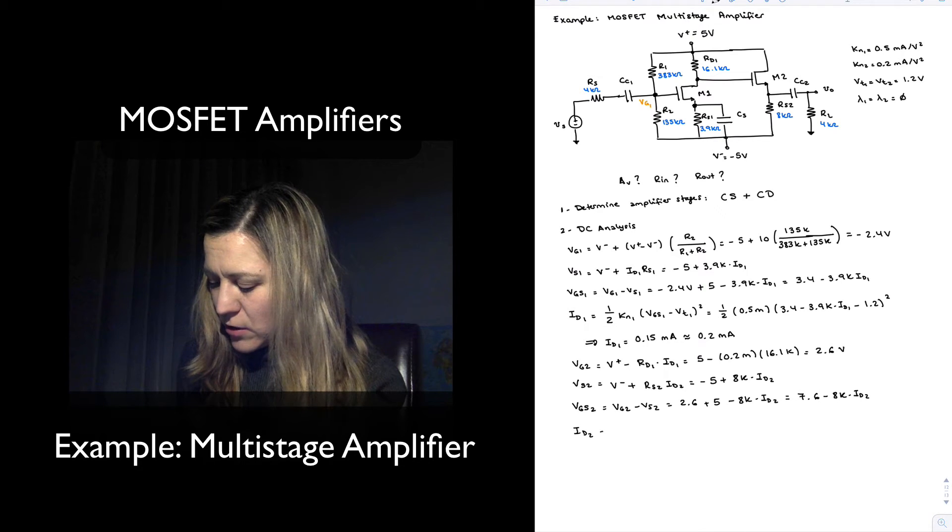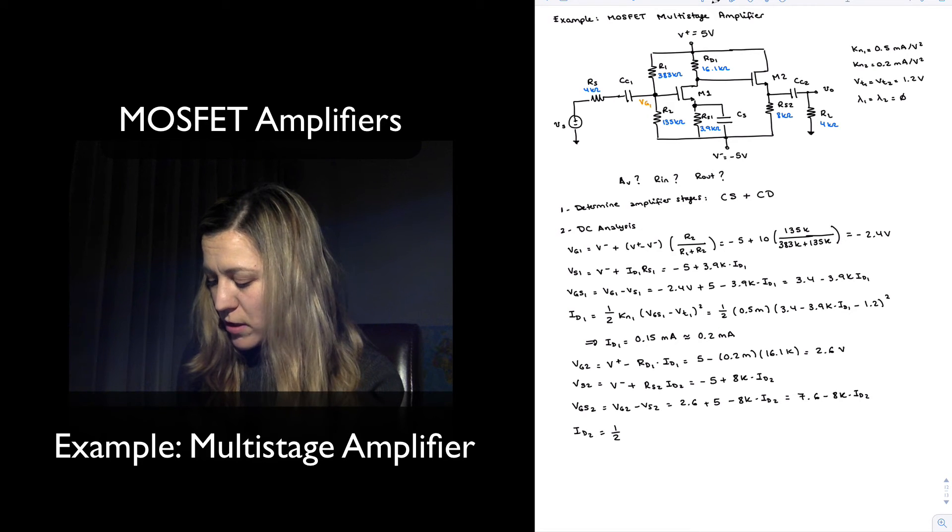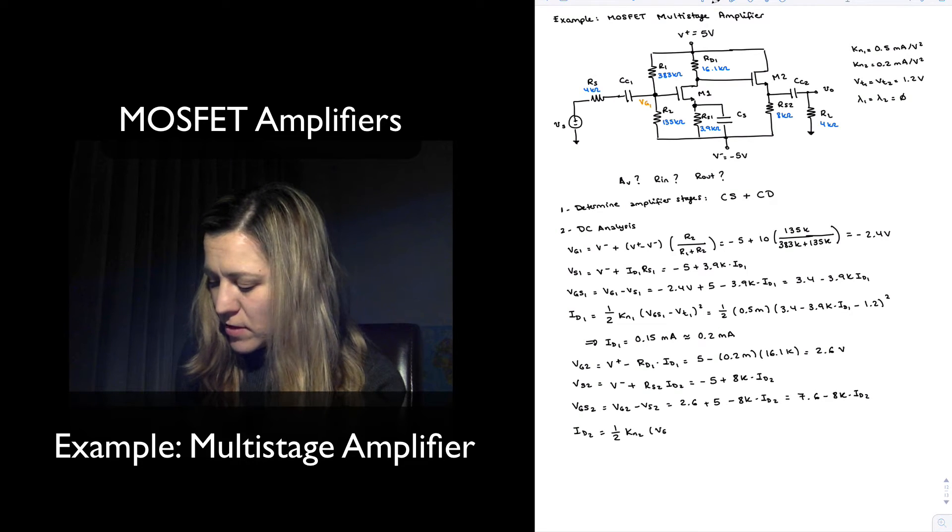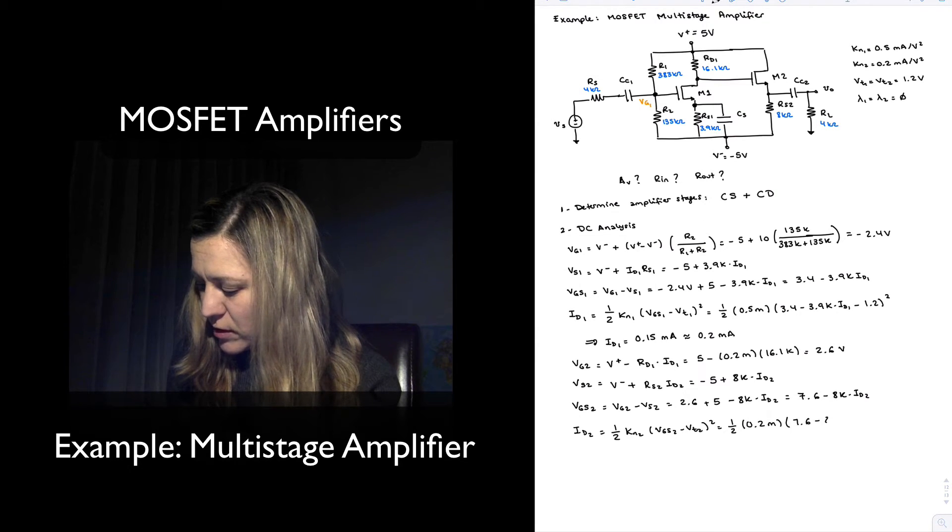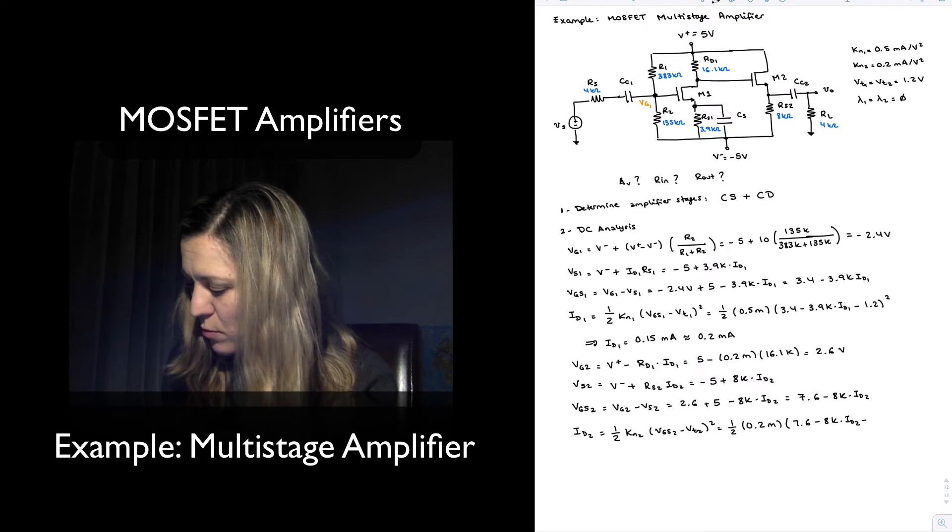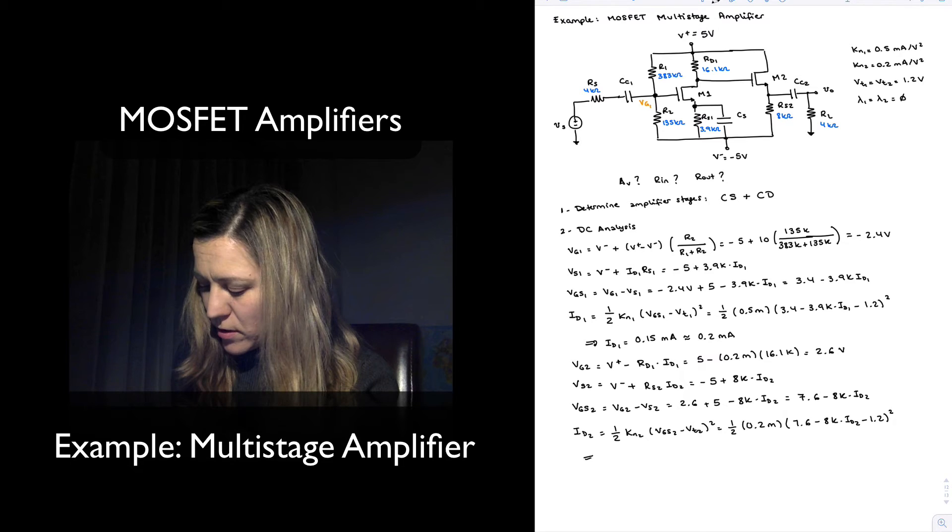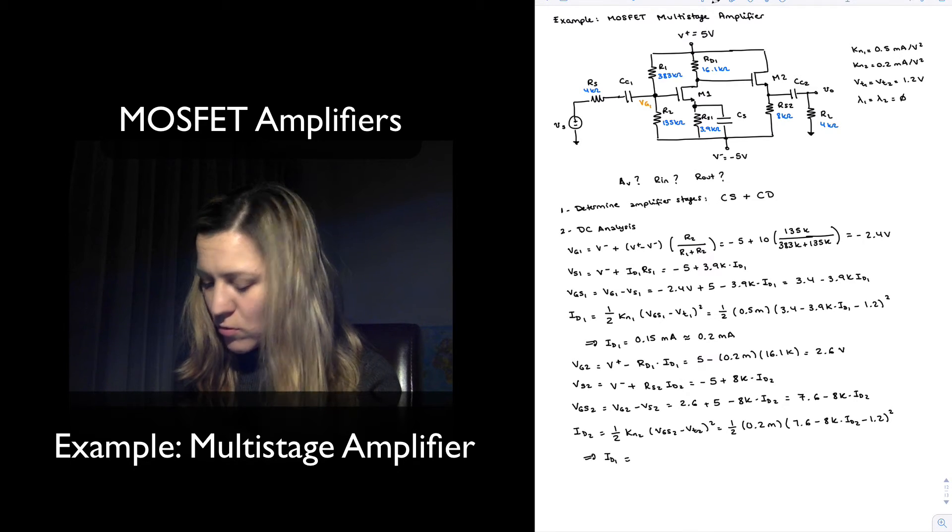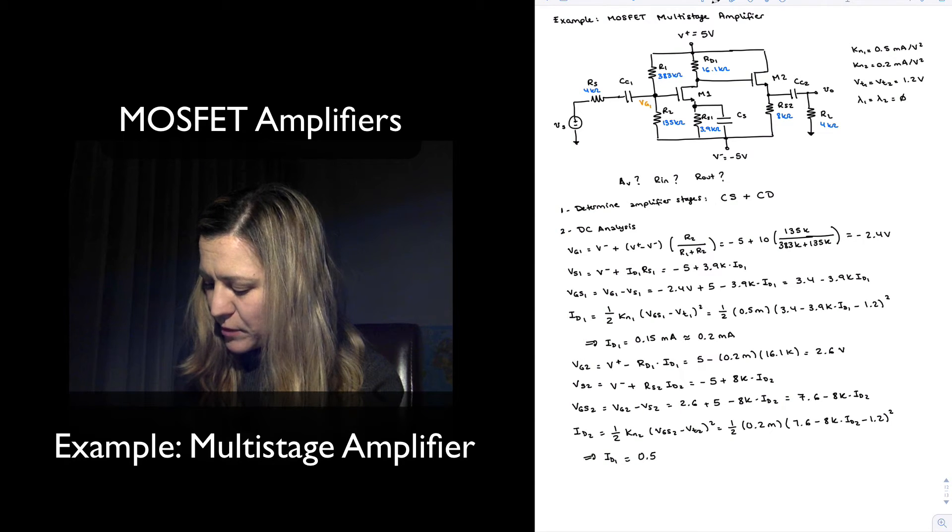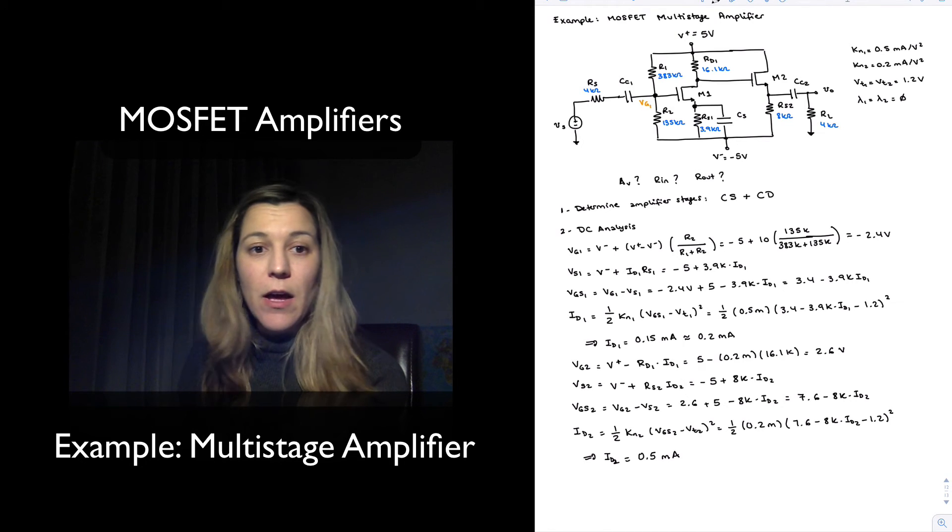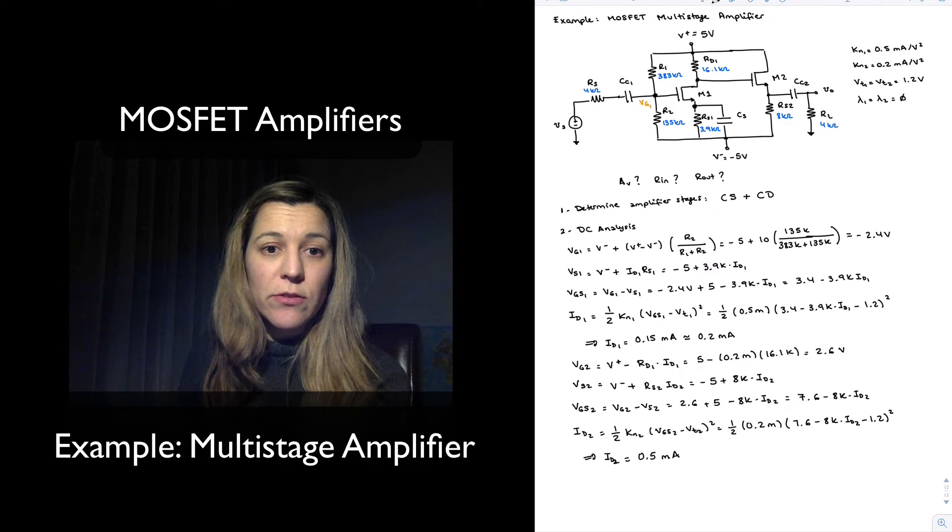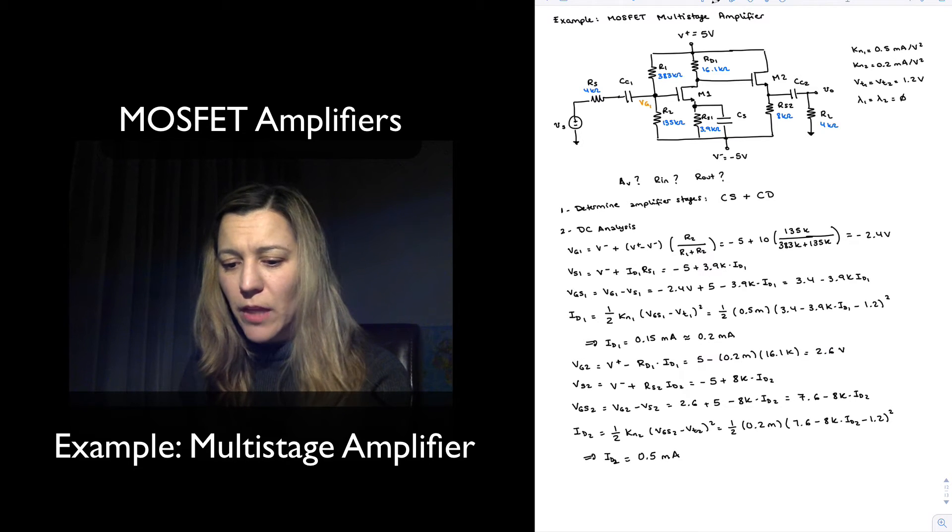Now I can write the expression for ID2 assuming M2 is in saturation as well: one-half of KN2 times VGS2 minus VT2 squared, or one-half times KN2 is 0.2 milliamps times 7.6 minus 8k times ID2 minus 1.2 squared. That gives me ID2 equal to 0.5 milliamps.